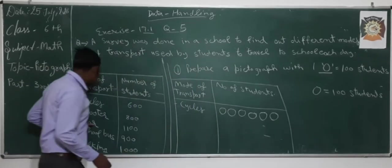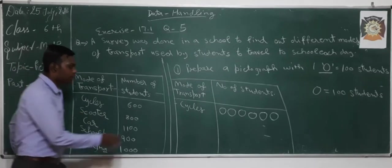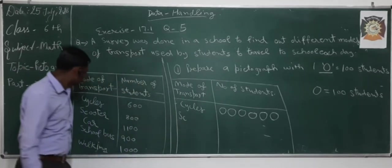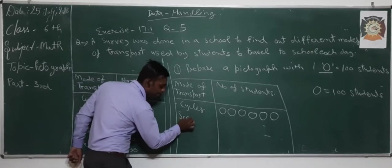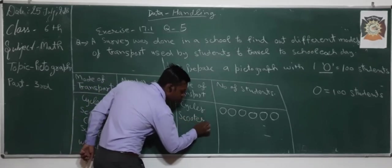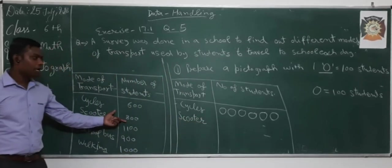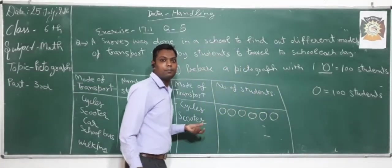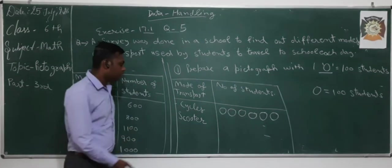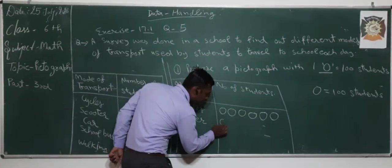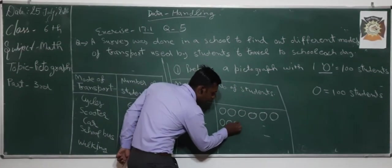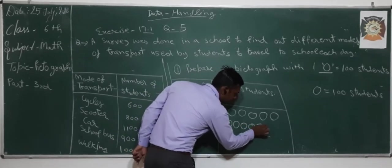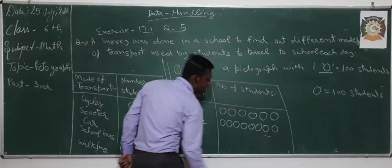The next mode of transport is scooters, used by 800 students, so we write 8 circles to represent it.